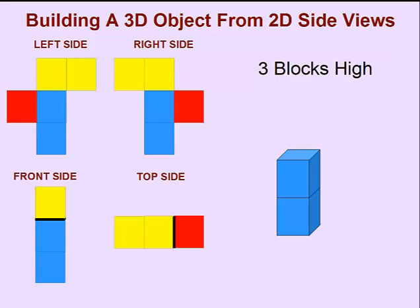We know that the third block must be a yellow block. By looking at the top side, we know that this is only one block wide.